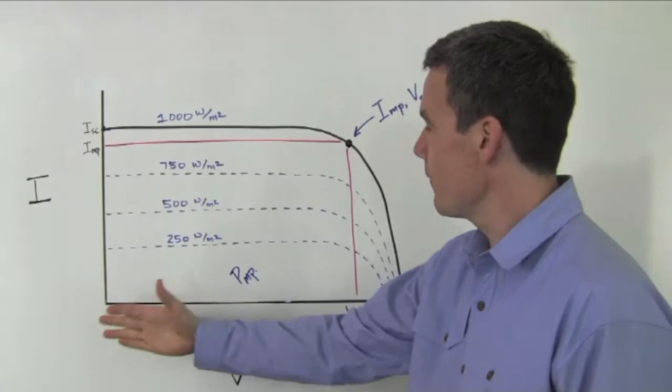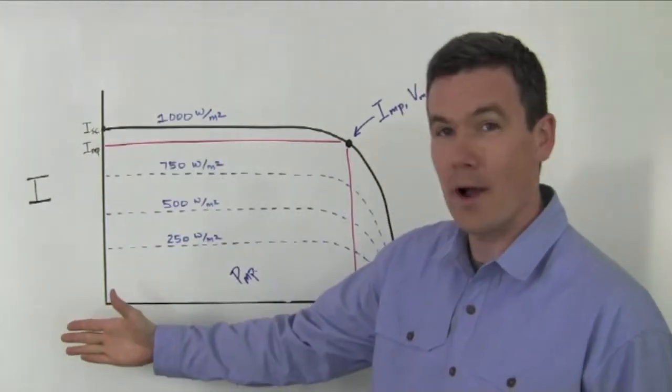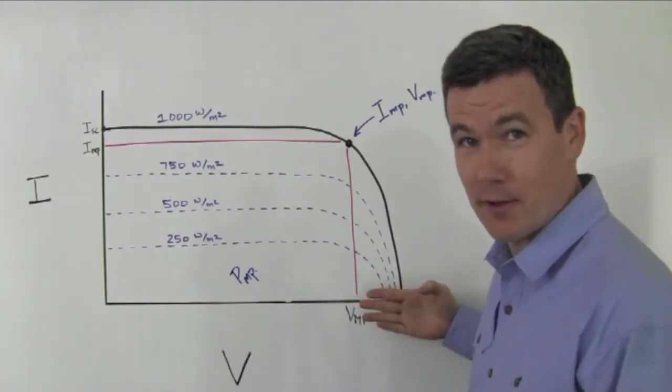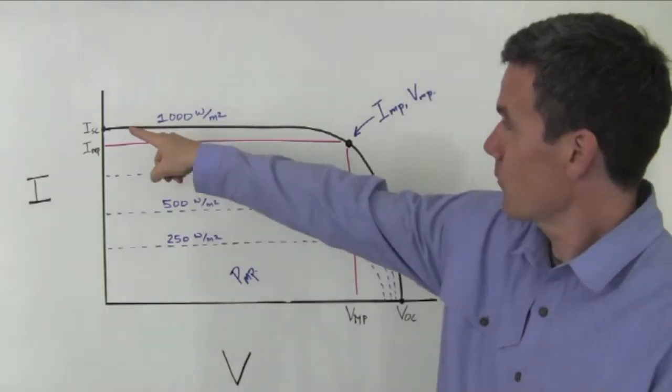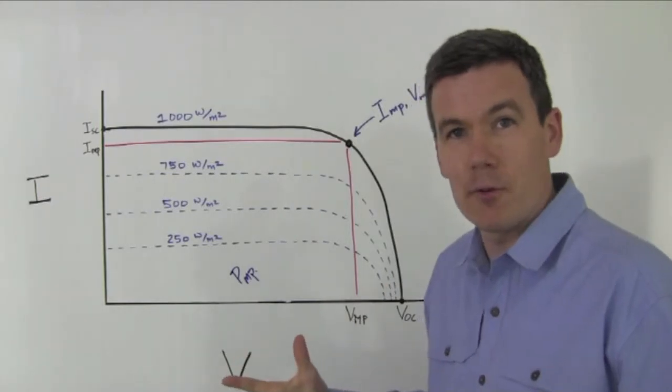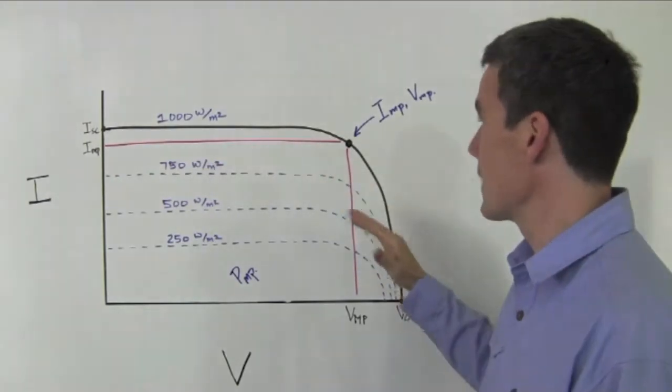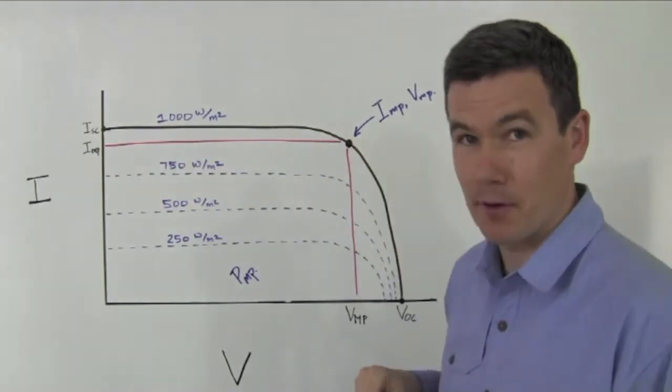This is a typical IV curve for a solar module. Current is on the y-axis, voltage is on the x-axis. This curve is typical for a normal crystalline solar module. A thin film module has a similar curve. It might have a little softer knee. This is the knee of the curve.